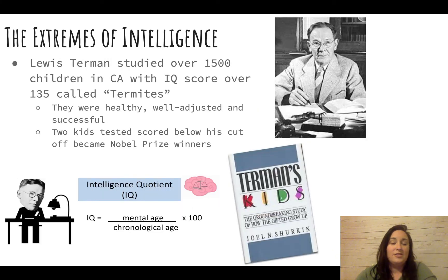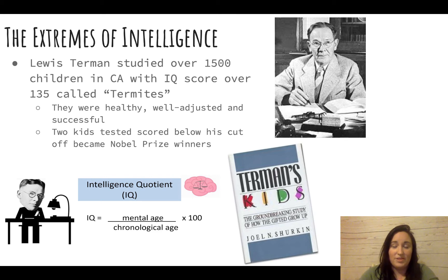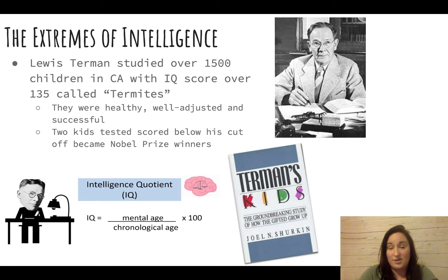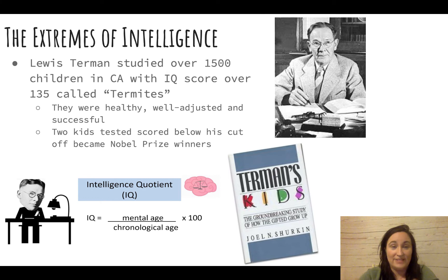On the other extreme of intelligence, Lewis Terman studied over 1,500 children in California with IQ scores above 135 — considered superior intelligence. These children became known as 'the Termites.'